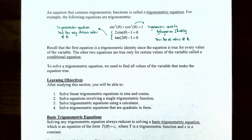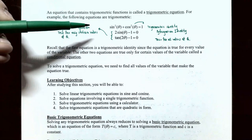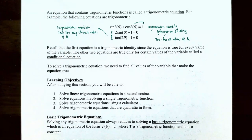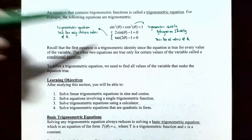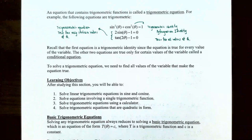An equation that actually contains trigonometric functions is called a trigonometric equation. For example, the following equations are called trigonometric equations. Sine squared of theta plus cosine squared of theta equals one — this is a trigonometric identity because it's a Pythagorean identity, and it's true for all values of theta.